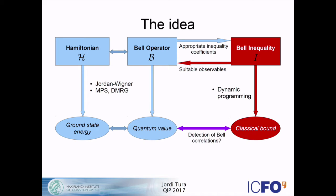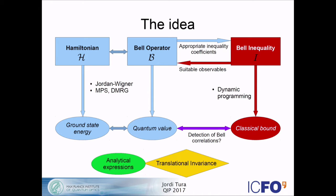On top of that, if one has symmetries such as translational invariance, then everything is much nicer. For the ground state energy, we will have analytical expressions with no need to diagonalize anything. And for the classical bound, we are going to have an exponential speedup in the number of parties.